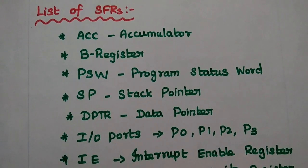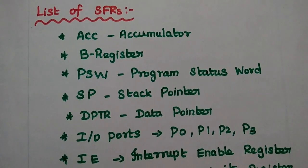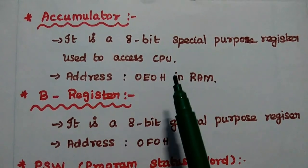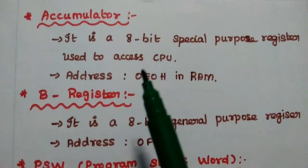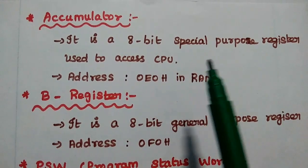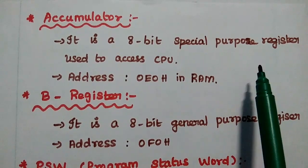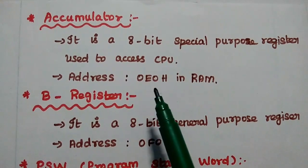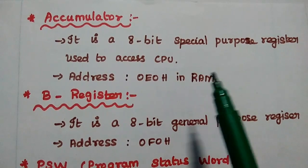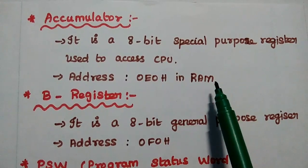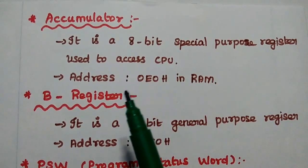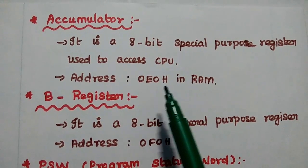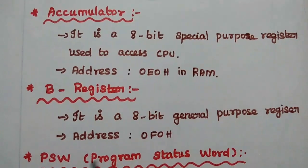The first SFR is the accumulator. It is an 8-bit special purpose register widely used to access the central processing unit. Its address is 0E0H in RAM.